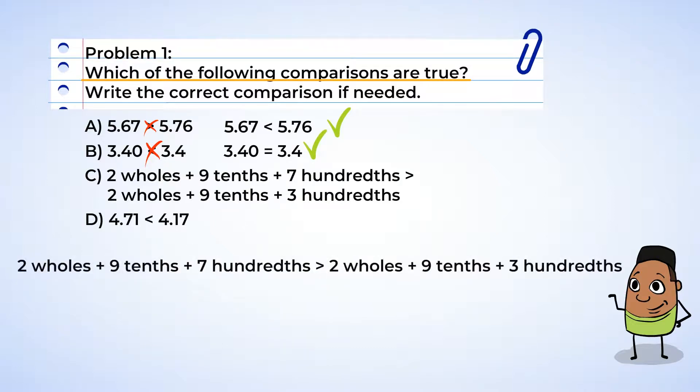Moving on to part C. 2 wholes plus 9 tenths plus 7 hundredths is greater than 2 wholes plus 9 tenths plus 3 hundredths. Alright, the ones are both 2. And when we look to the tenths place, we can see that they are both 9. So we're gonna have to now look at the hundredths place. Well, 7 is greater than 3. So 2 and 97 hundredths is greater than 2 and 93 hundredths. Hey! This one's true! Cool!